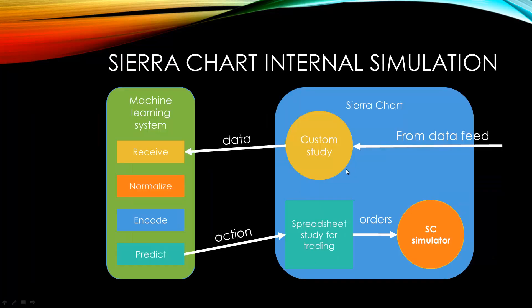What we want is the data to come in — in this case, the data is going to be historical data that we already have. We're going to process that through the custom study, it's going to talk to the machine learning system, it's going to send back an action, the spreadsheet is going to decide to place an order. And when that order gets placed, we just want that to happen inside the Sierra Chart simulator — that's in the software sitting on your computer. We don't want to actually send any orders out to anyone. That's how this replay system works — it uses an internal simulator.